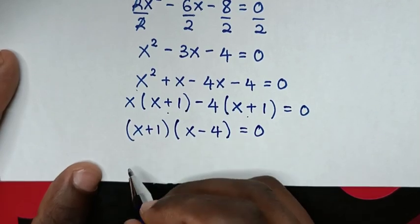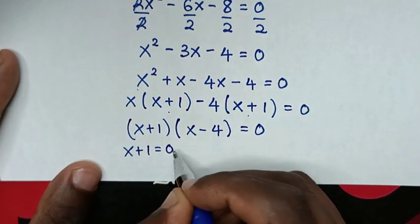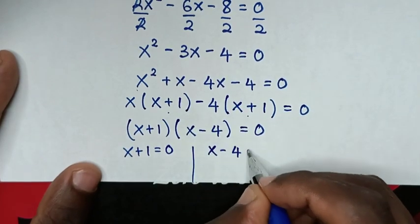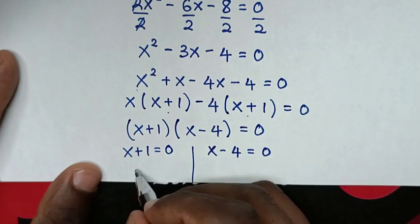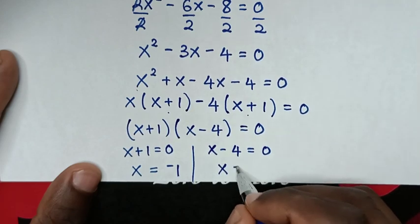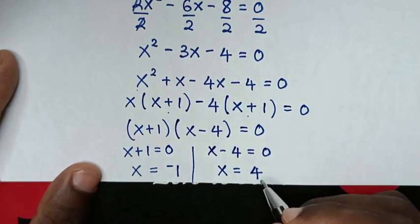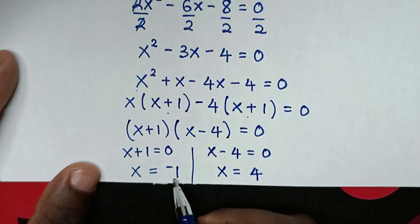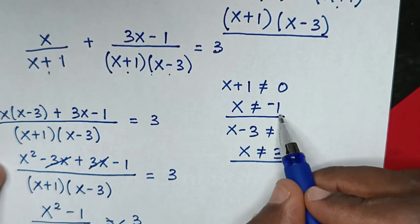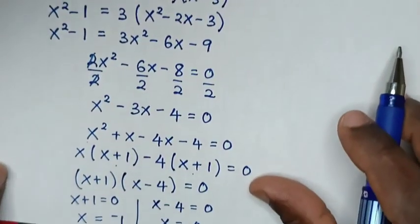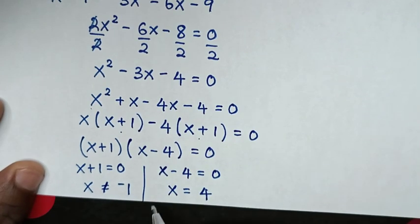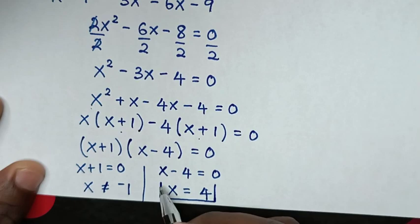From this equation we have two solutions: x plus 1 equals 0, giving x equals negative 1, and x minus 4 equals 0, giving x equals 4. However, we previously noted that x should not be equal to negative 1, because when x is negative 1 the original equation is undefined. Therefore the only solution is x equals 4.